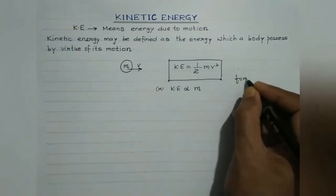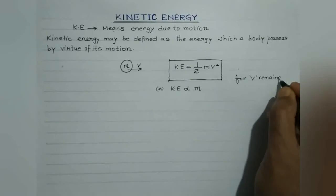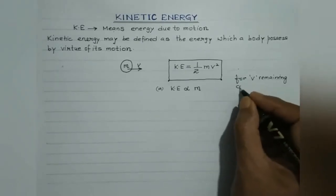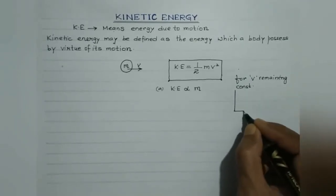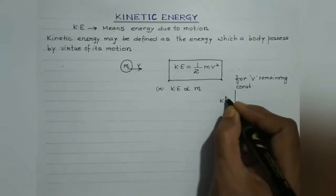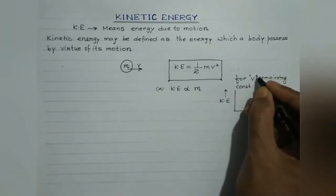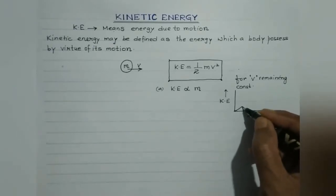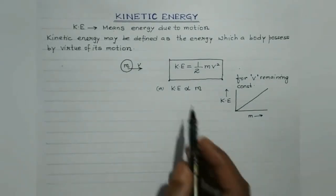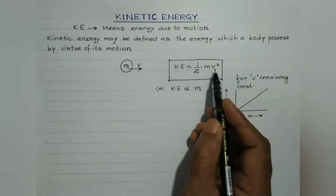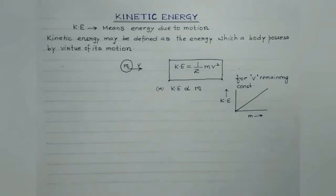For v remaining constant, if you plot a graph between kinetic energy and mass, kinetic energy will increase linearly with mass. So kinetic energy is directly proportional to mass, showing a linear dependency. If v is constant, the graph between KE and mass would be a straight line passing through the origin.